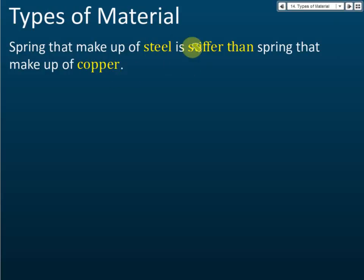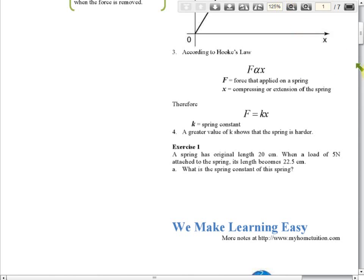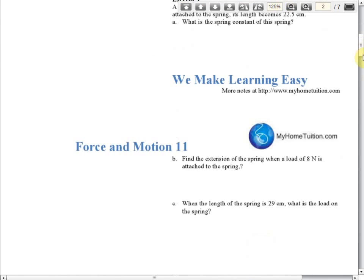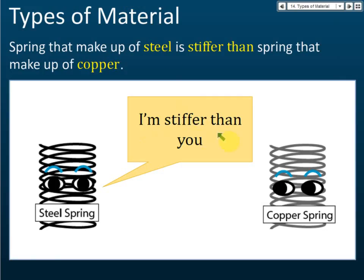This means the steel spring has a greater spring constant. So the steel spring is stiffer than the copper spring — that is the first thing you need to know.